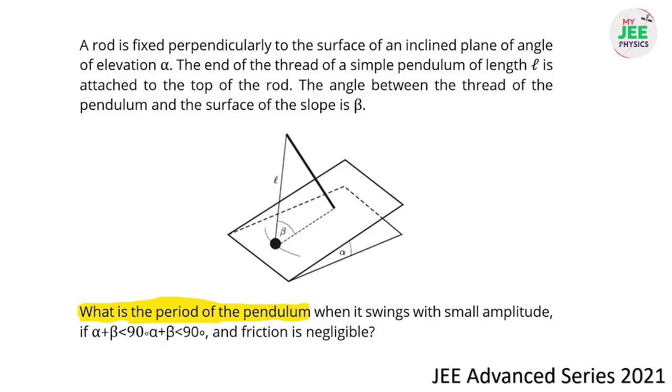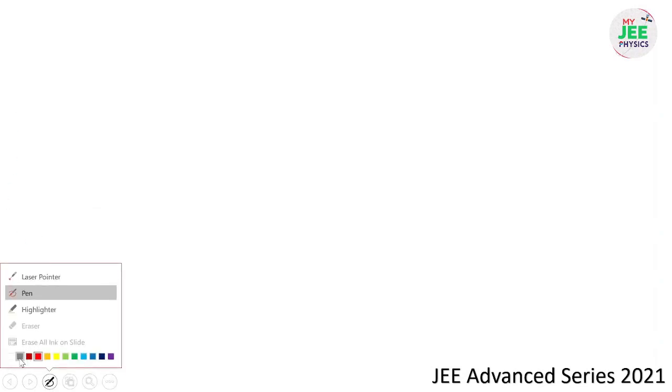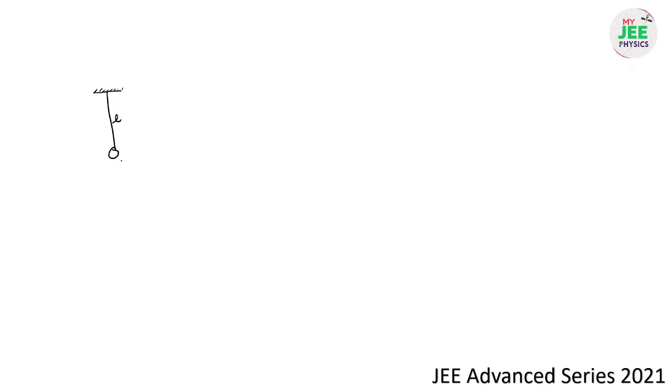Usually, simple pendulum questions are solved using the g-effective concept. If the length of the pendulum is l and mass of the bob is m, then the time period is T = 2π√(l/g). I won't go into the derivation details.